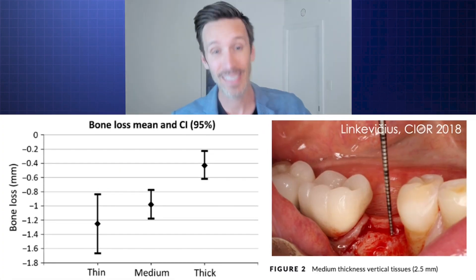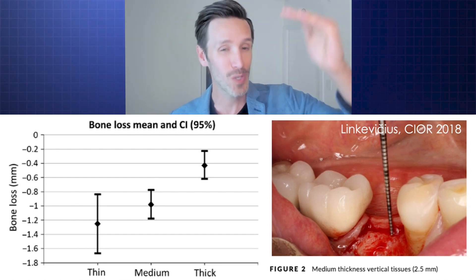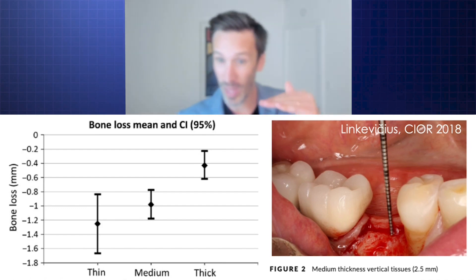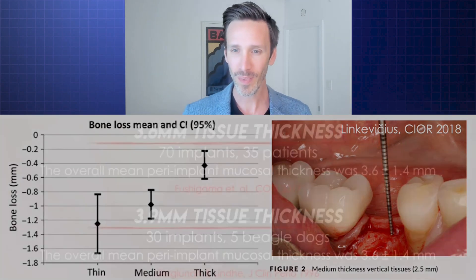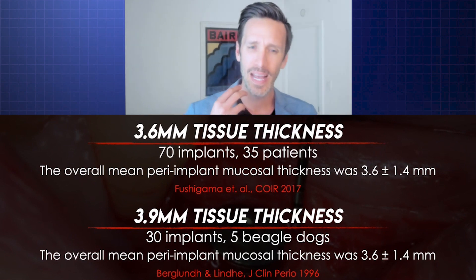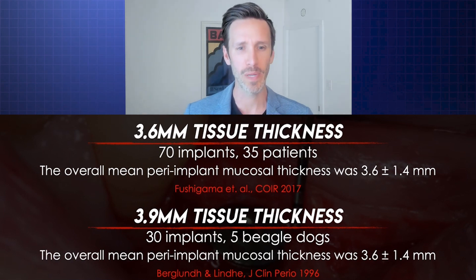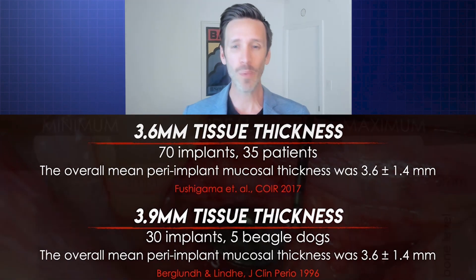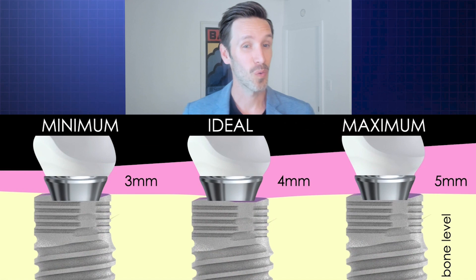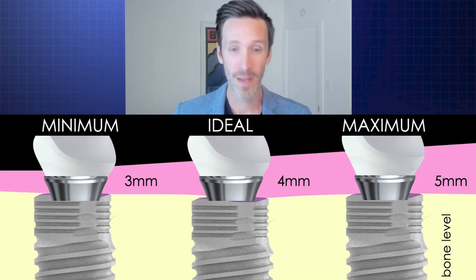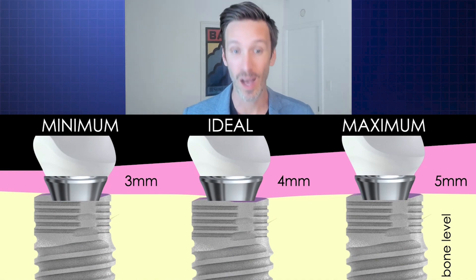So we started back in 1996 knowing that greater than two is better than less than two. Then 2015, now on humans, greater than two is better than less than two. And now here we are — we know that three is better than even 2.5 or two. Also, when you look at some other studies where they place implants and then check the mucosal thickness after the implant has integrated and been in function, what they find both in dogs and in humans is that we have more than three millimeters of tissue thickness — 3.6, 3.9. This is where we start to get to the idea of what is our minimum, what is our ideal, and what is our maximum. Really, four millimeters is what we're using with our team as our ideal vertical tissue thickness above our implants.